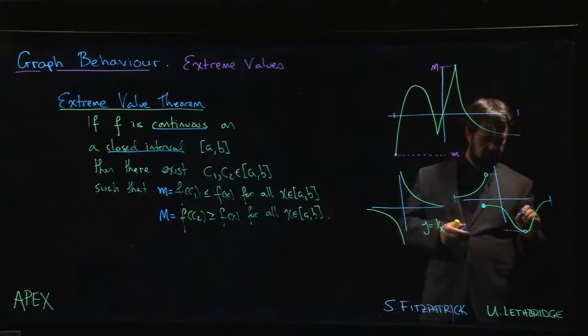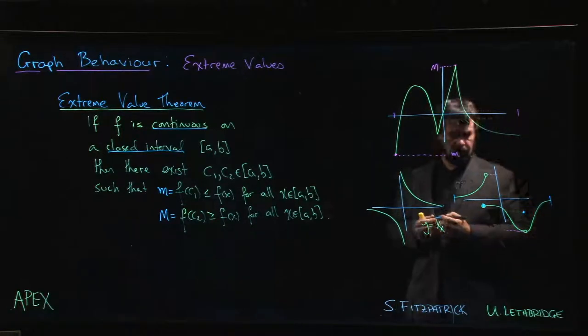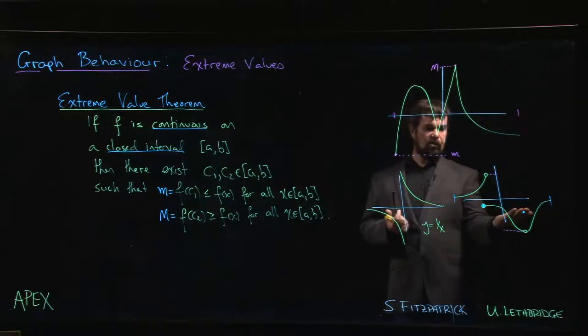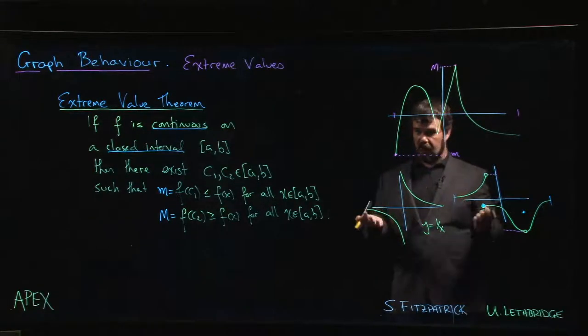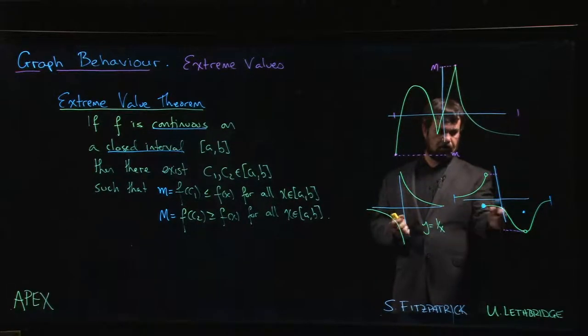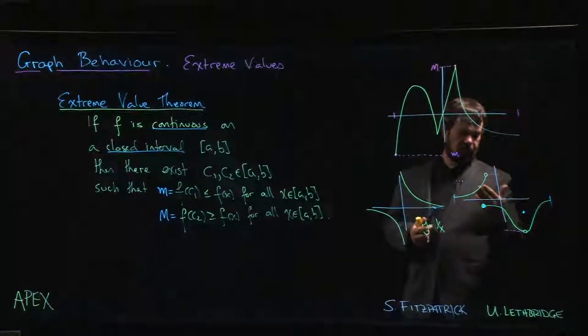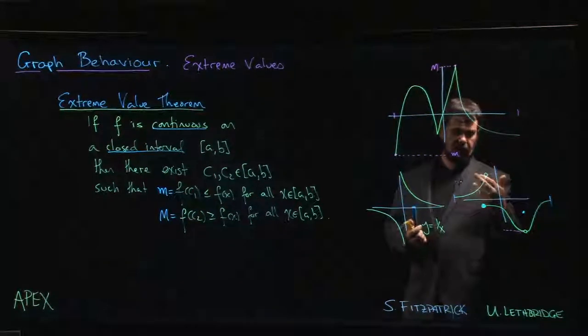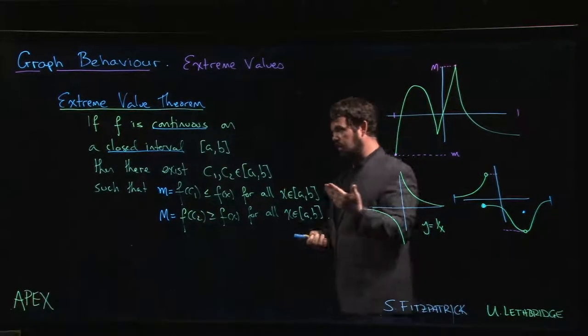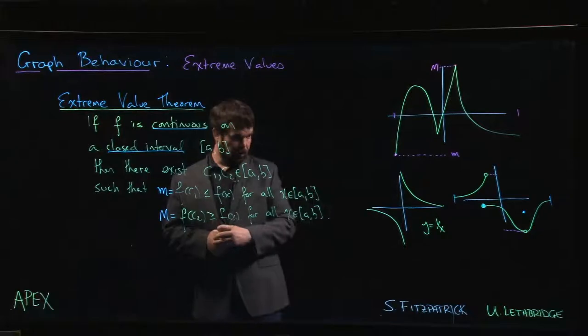So maybe the function is defined on a closed interval, but it's not continuous on that interval. It has a jump discontinuity, removable discontinuity, right? So because it's not continuous, we can still have this situation where we don't actually achieve a max or a min value.